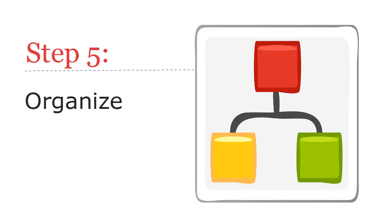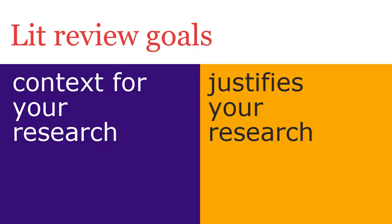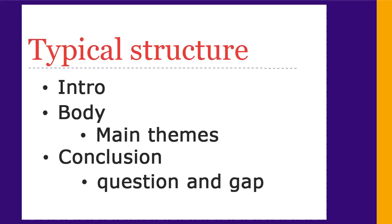Once you've figured out what patterns there are to talk about, you can start organizing your review. Remember that your literature review is there to situate your research in its scholarly context. This is so others can see how your research is similar to what already exists. But it also justifies your work by showing that it's somehow different, and therefore worth doing. Literature reviews look different in different disciplines, but the basic structure is focused around these goals of situating and justifying your work. In the body, you discuss the themes and patterns you found in the literature as they relate to your research question, including any gaps you see.